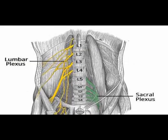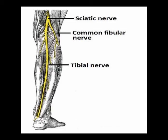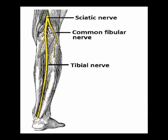It receives fibers from the posterior division of spinal nerve roots L4 through S3. The common peroneal nerve is one of the main branches of the sciatic nerve.